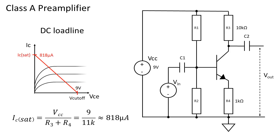To find the collector current at saturation or IC sat we assume that the transistor is shorted and the maximum current is controlled by R3 and R4. This results in a current of Vcc divided by R3 plus R4 or 9 volts divided by 10k plus 1k ohms equals 818 microamps.